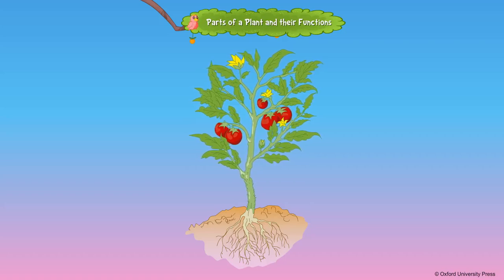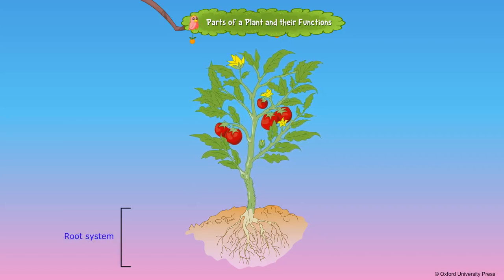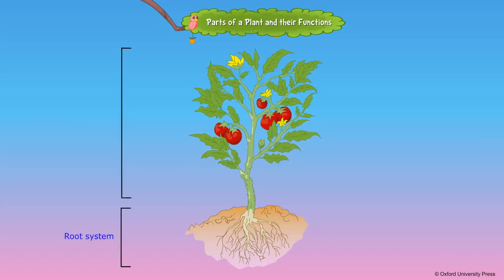A plant has two main parts. The part that grows under the ground is called the root system. The part that grows above the ground is called the shoot system.